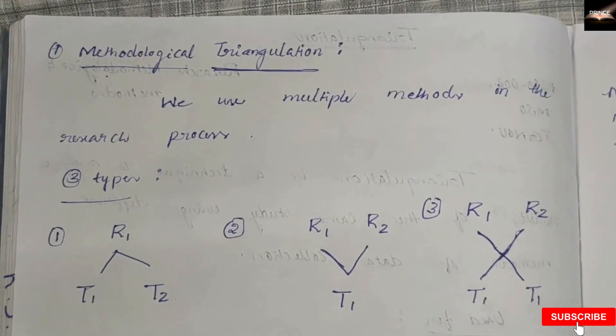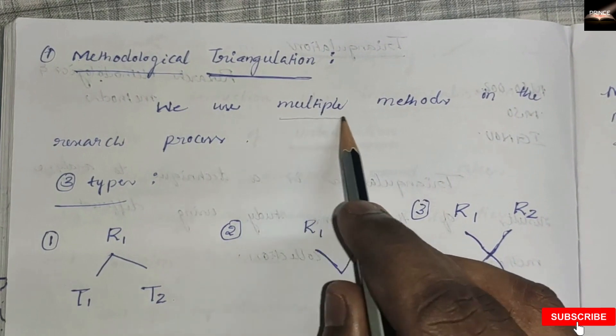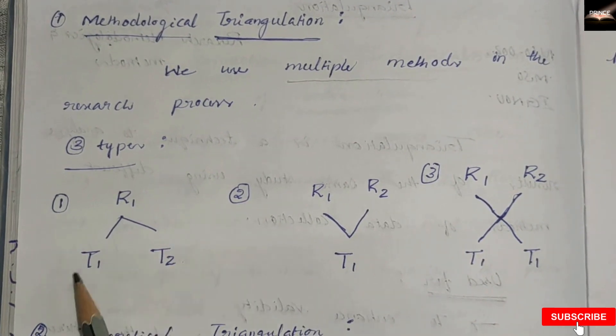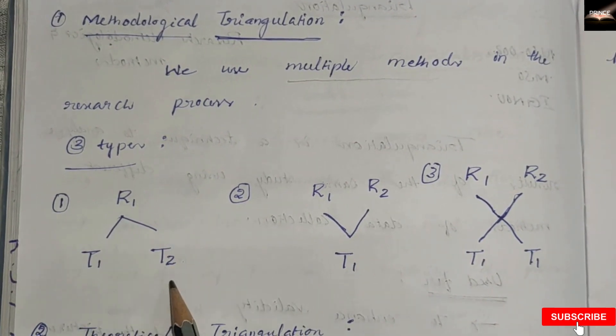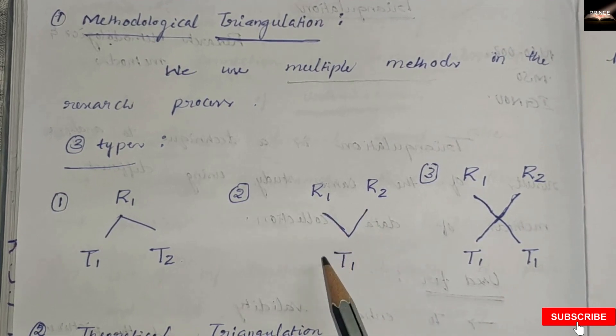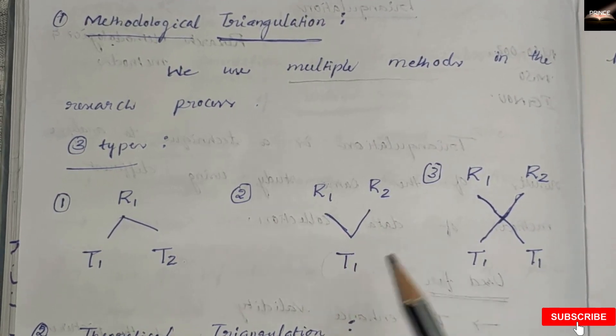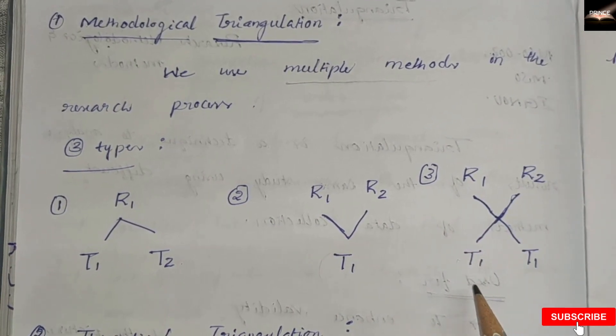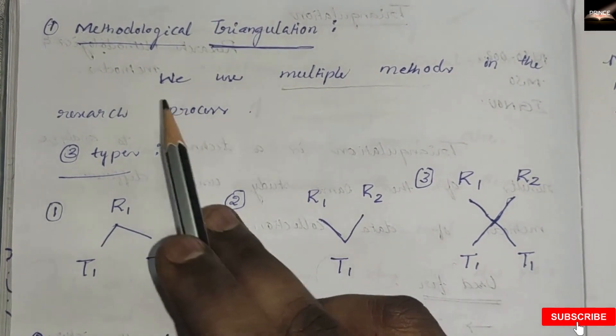Methodological triangulation uses multiple methods in the research process. There are mainly three types: one, researchers use two or more research techniques; two, two or more researchers use the same research technique; and three, two or more researchers use two or more research techniques.